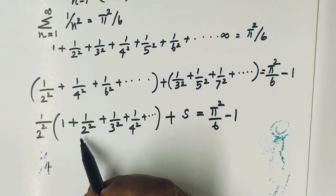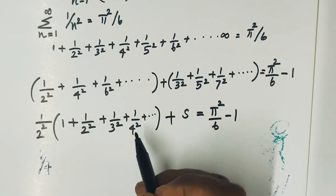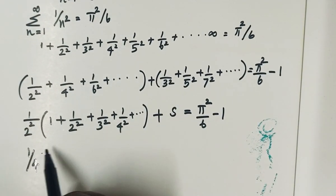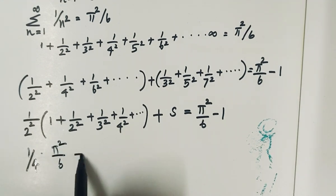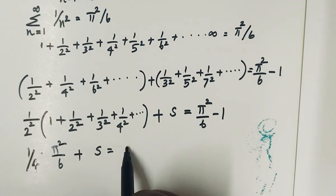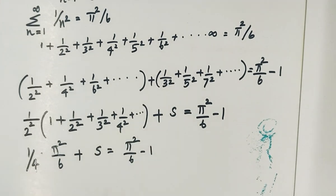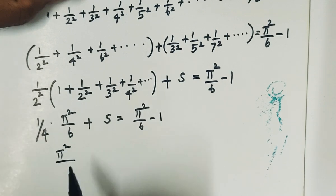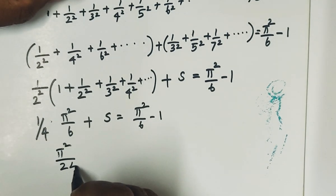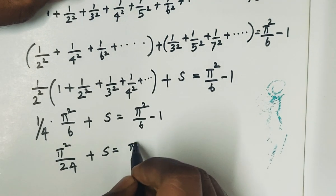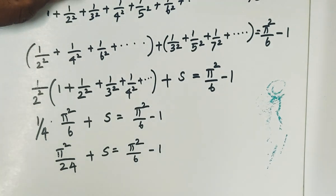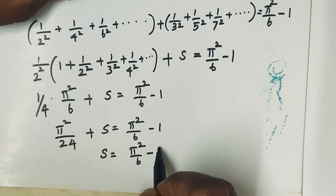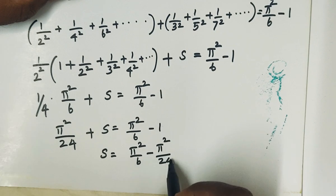So the even terms sum to pi square by 4 into 6 equals pi square by 24. Therefore, S equals pi square by 6 minus pi square by 24 minus 1. Next step: S is equal to, taking 24 as common denominator, 4 times pi square minus pi square equals 3 pi square. So S equals 3 pi square by 24 minus 1.